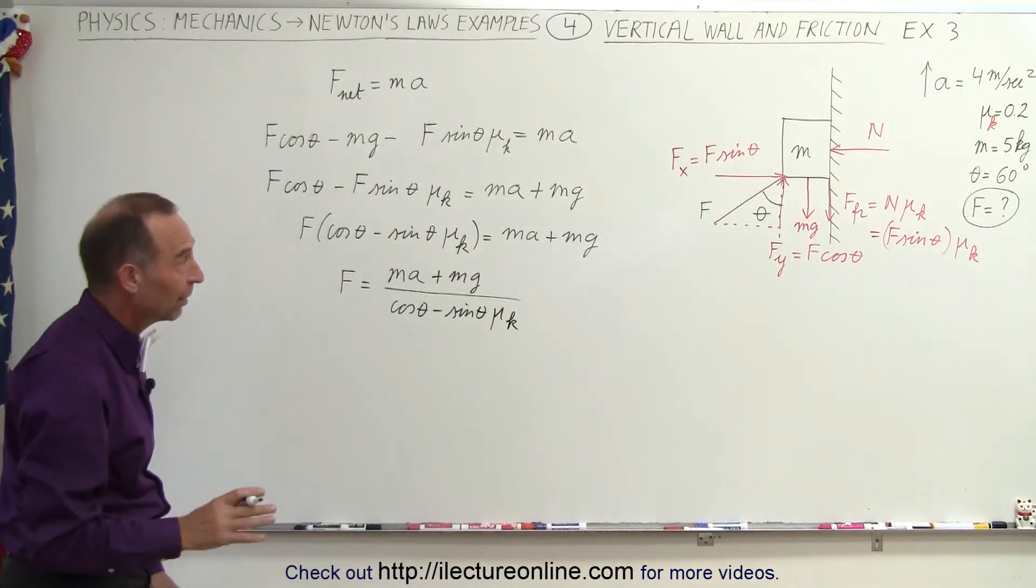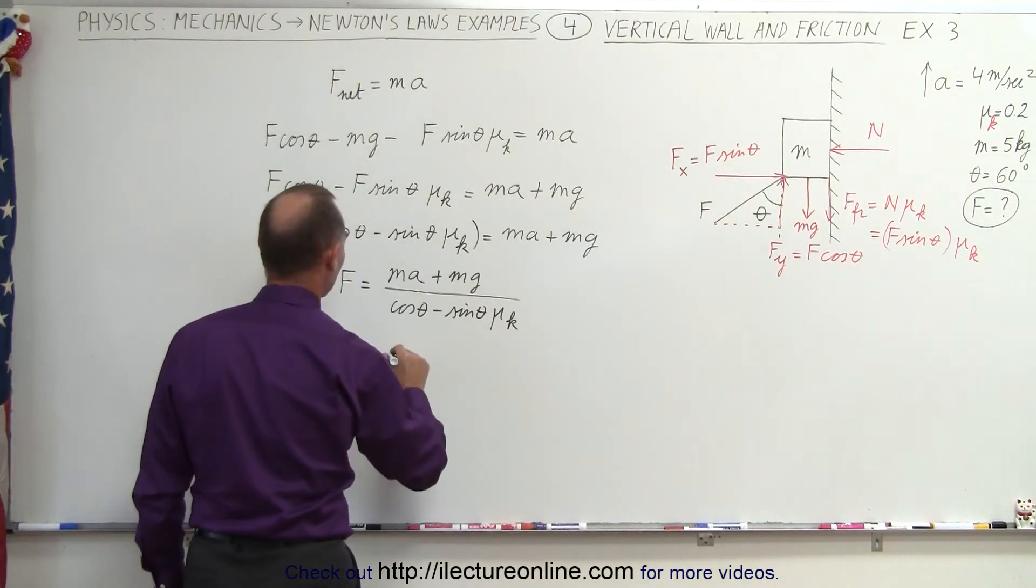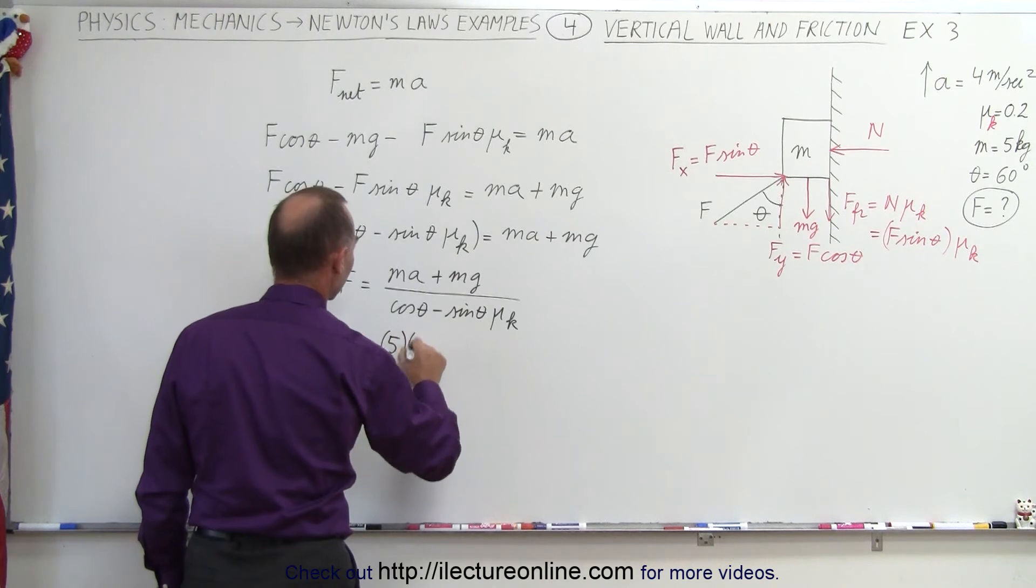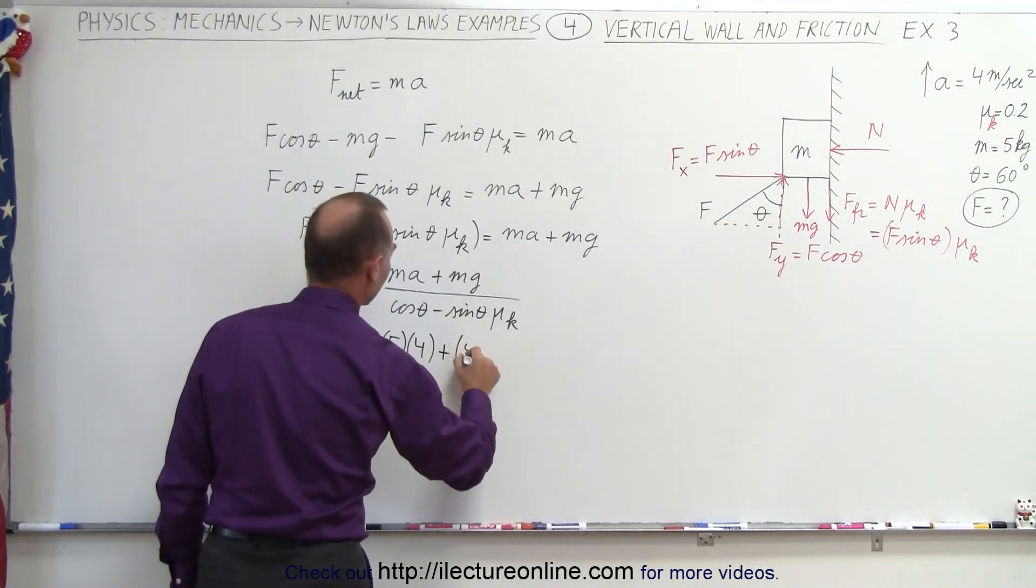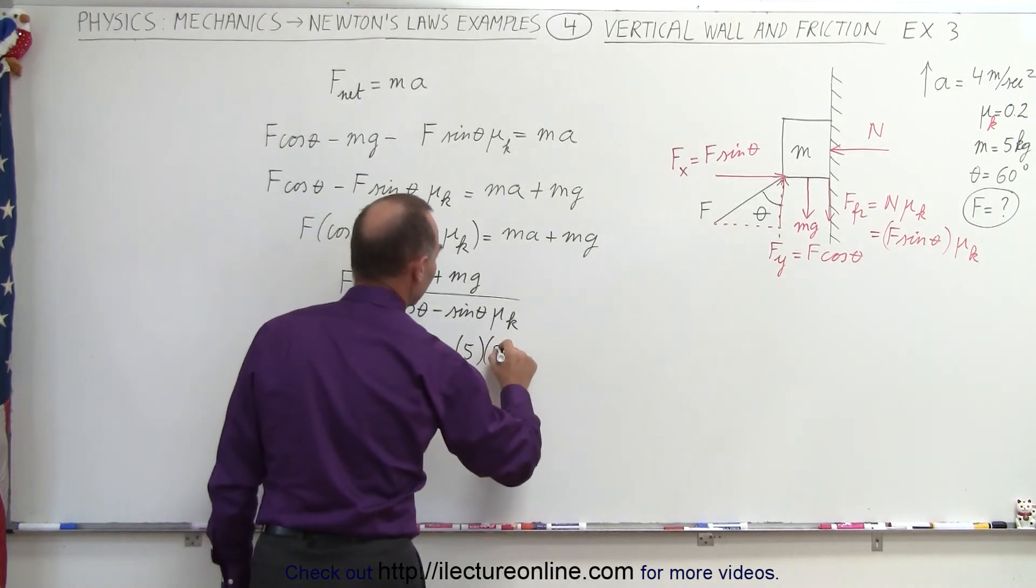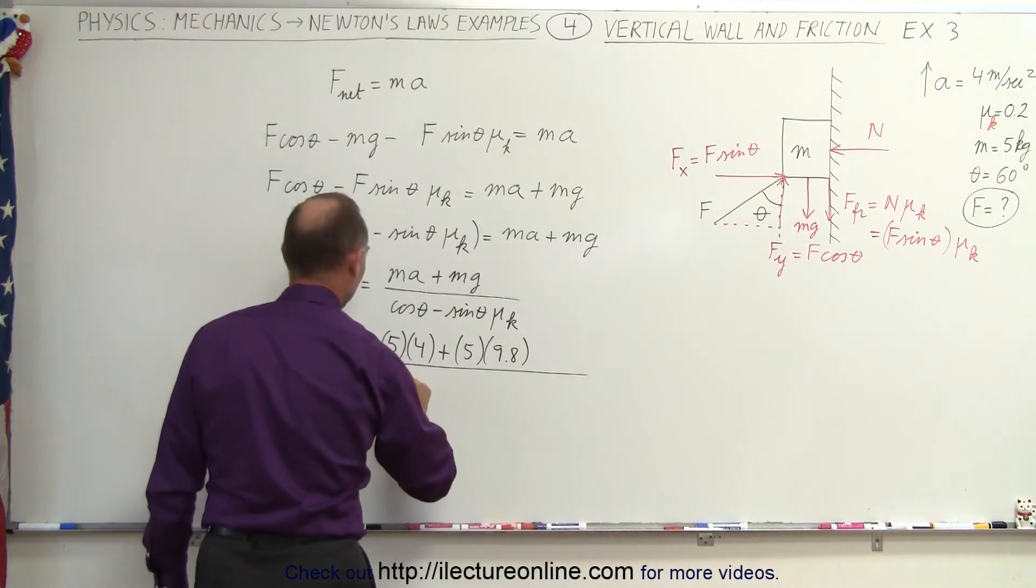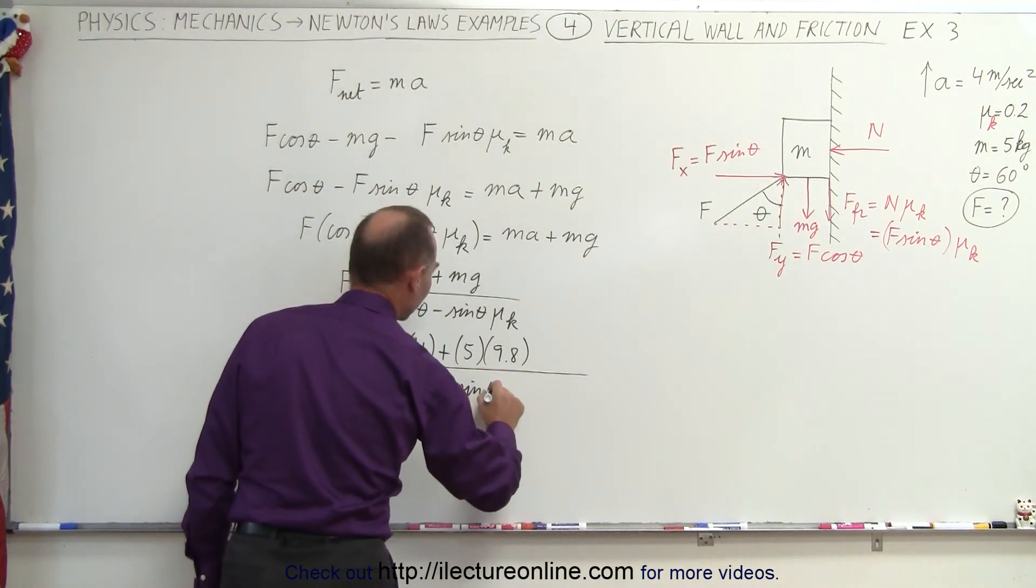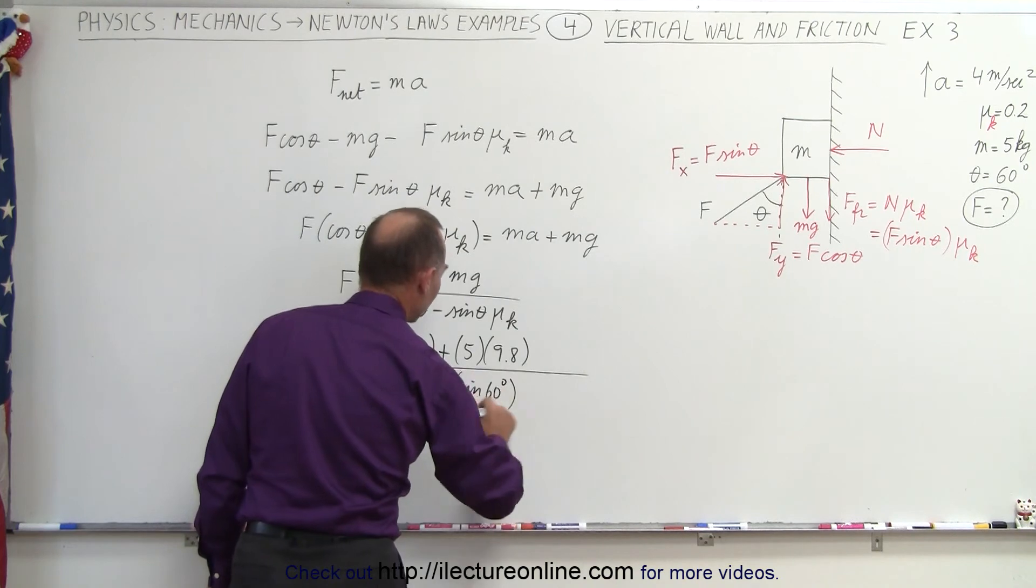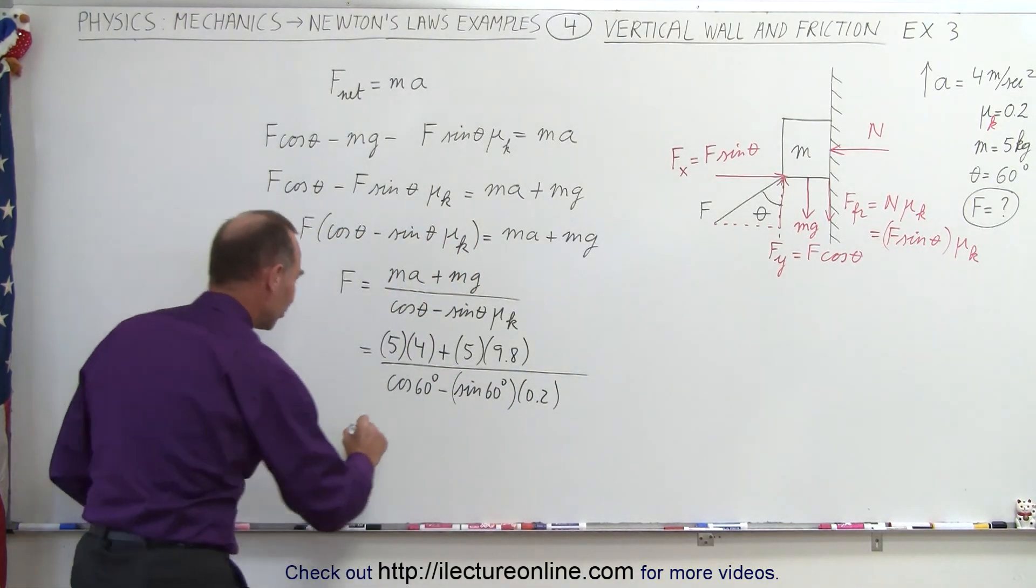And so now we're ready to figure out what the force required will be to accelerate the object upward at 4 meters per second squared. So this is equal to the mass, 5 kg, times 4 meters per second squared, plus the mass, 5 kg, times 9.8 meters per second squared, all divided by the cosine of 60 degrees minus the sine of 60 degrees times 0.2, which is the coefficient of kinetic friction.